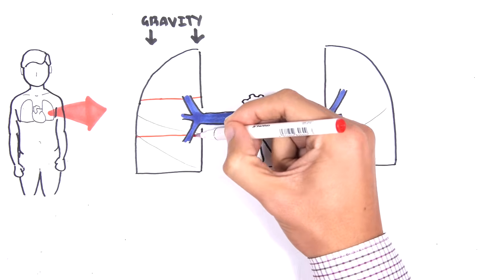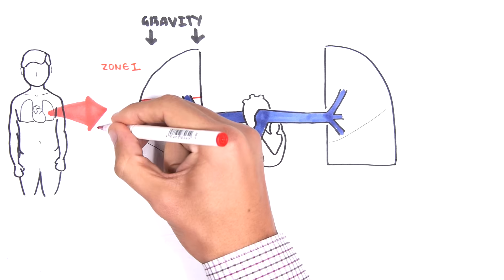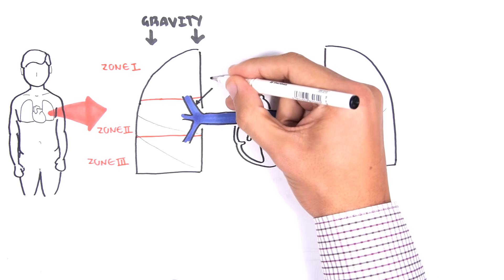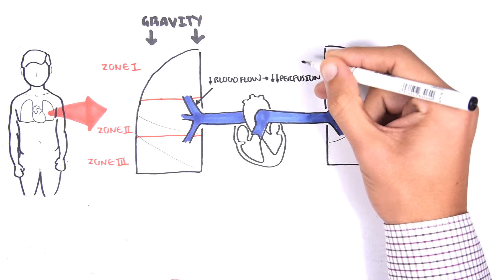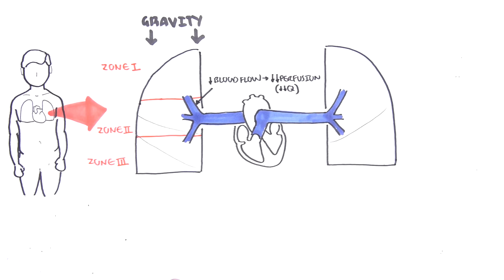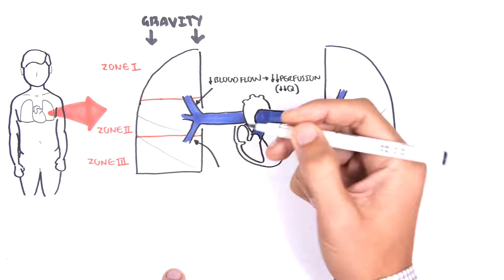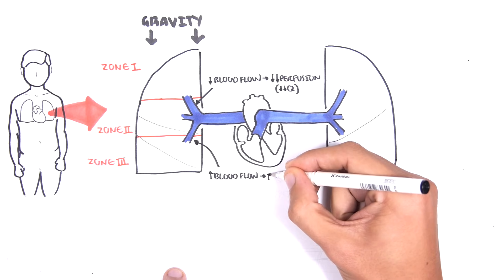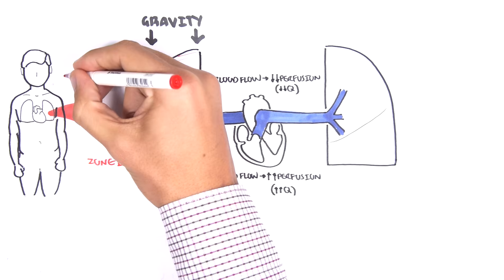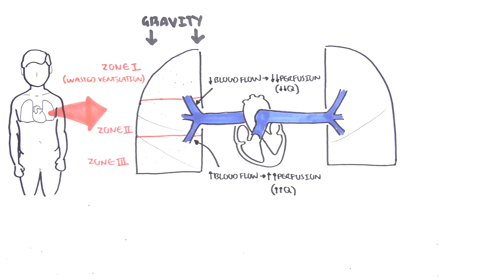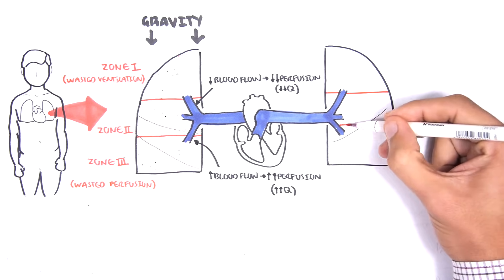The lungs can be divided into three zones. Blood traveling to the zone on the top at the apex of the lung will be decreased because of gravity — there is decreased perfusion at the apex, represented by Q. This means that blood flow to the base of the lungs will have an increase in perfusion, so Q is increased. Thus, at the apex of the lung we have wasted ventilation: all the gas that goes to the alveoli is not exchanged efficiently because there is less perfusion. Whereas at the base of the lungs we have wasted perfusion — there is a lot of blood flow but not as much ventilation, not as much gas going into these alveoli.